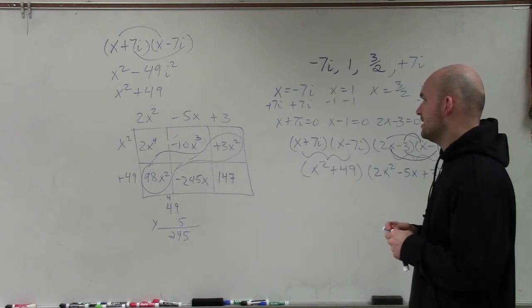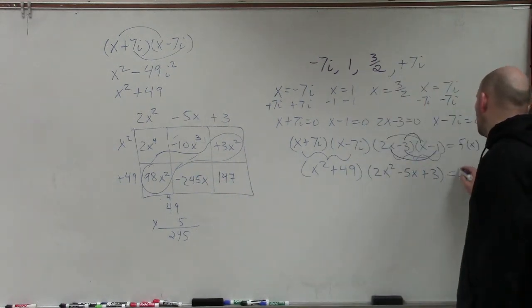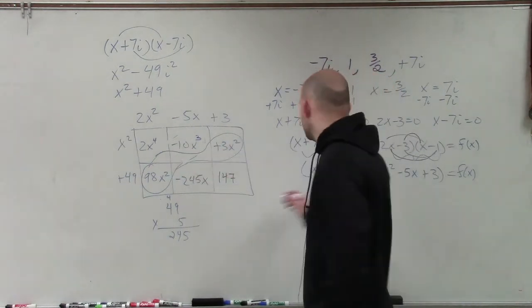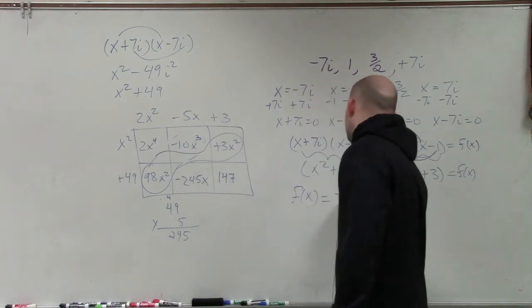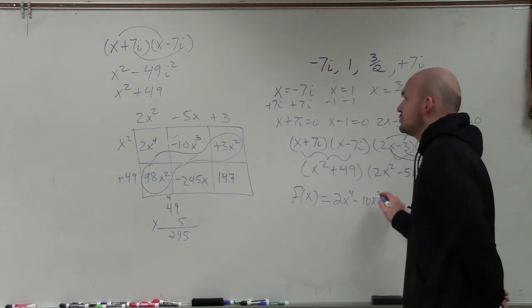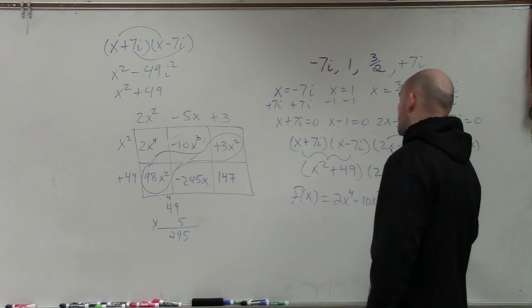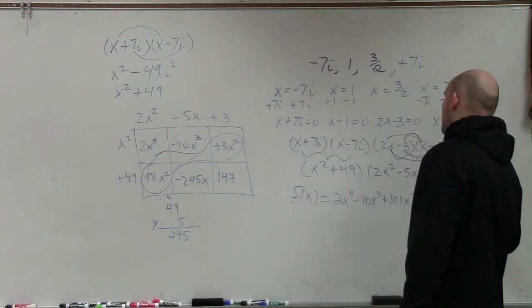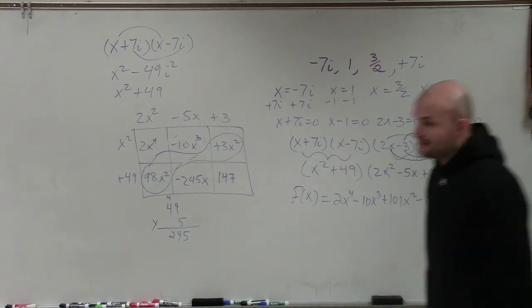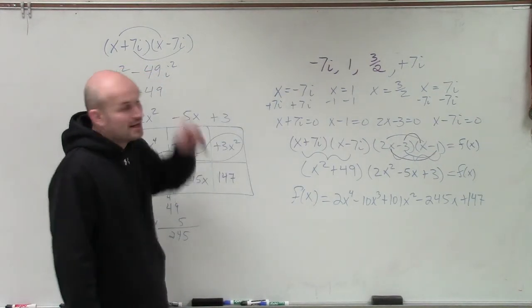So now, let's go ahead and combine them up. So now, again, this product is going to equal f of x. So now I can combine these two, and well, let's just work on the highest degree. So I'll rewrite the f of x first. So f of x equals 2x to the fourth. Then my x cubed is negative 10x cubed. Now, 98x squared plus 3x squared is going to be 101x squared minus 245x plus 147. So there you go, ladies and gentlemen. That is going to be our lovely polynomial when we have the zeros of negative 7i, 1, and 3 halves. Thanks.